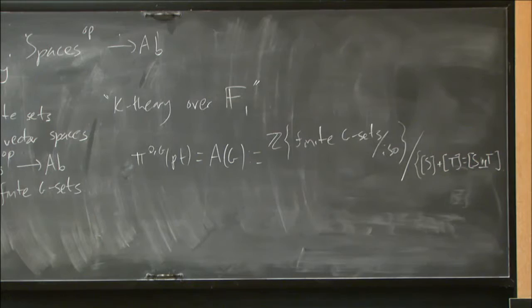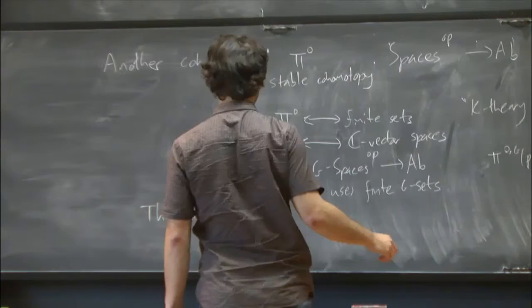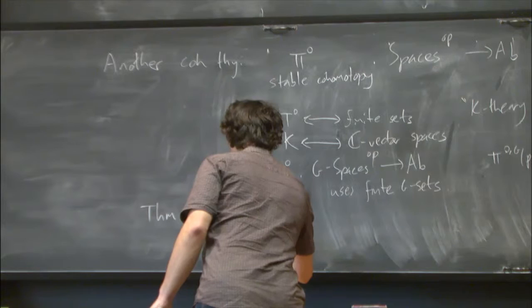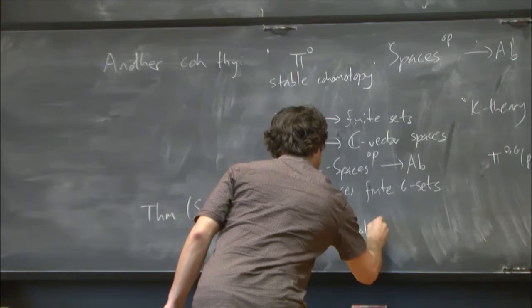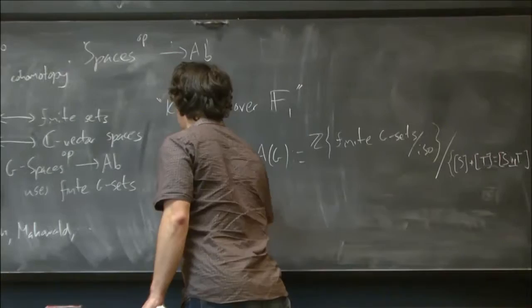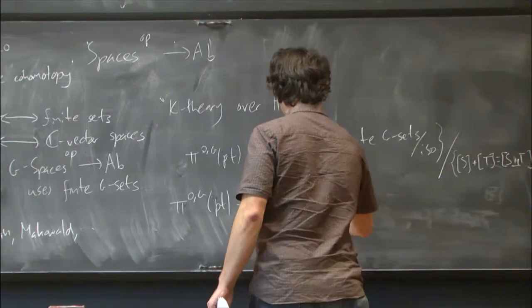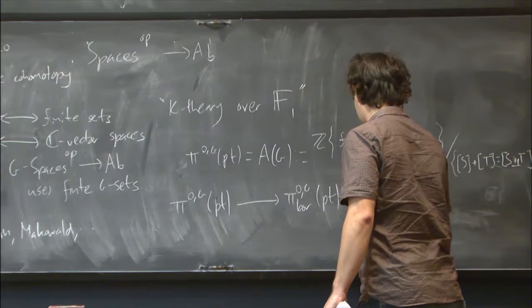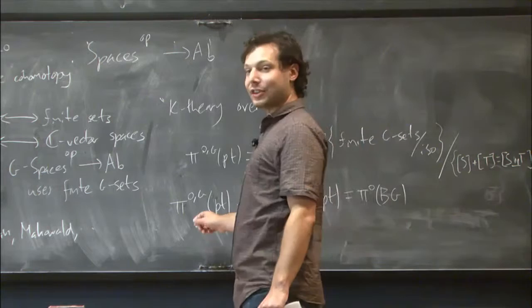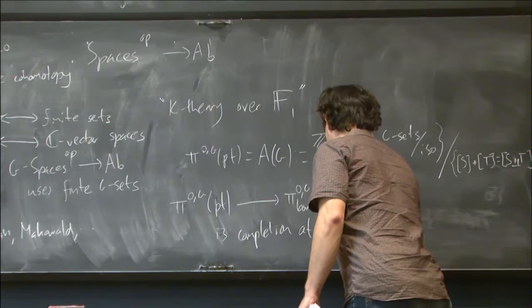All right. So you can ask about analogs of the Atiyah-Segal completion theorem for this cohomology theory. And this is a theorem known as the Segal conjecture, although it hasn't been a conjecture for 30 years. It was proved by Carlson, Lin, Mahowald, a whole bunch of other people working at different times. It was Carlson who finished it off. But the theorem is as follows, and you've probably guessed already, pi 0 G of a point. Well, it admits a map to the Borel version of pi 0 G on a point, which is by definition non-equivariant pi upper 0 of BG. And this is, again, completion at the augmentation ideal, which is defined in exactly the same way as for the representation ring.